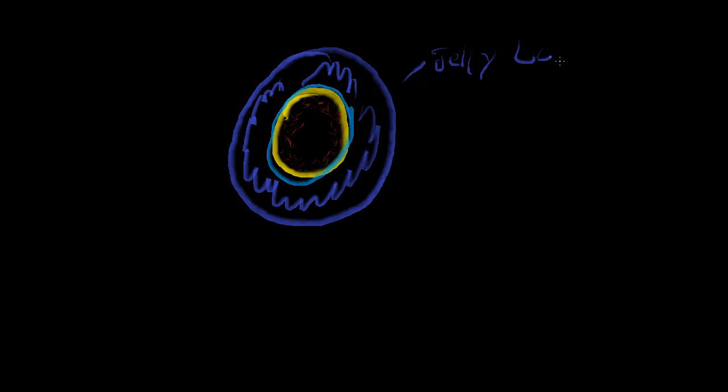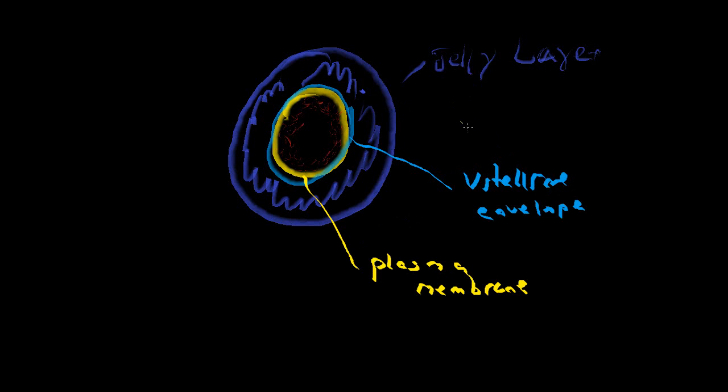First off, this is the jelly layer. This here is the vitellin envelope, and this would be the plasma membrane. The jelly layer serves protective roles for the egg. It's also a basic protection against polyspermy.